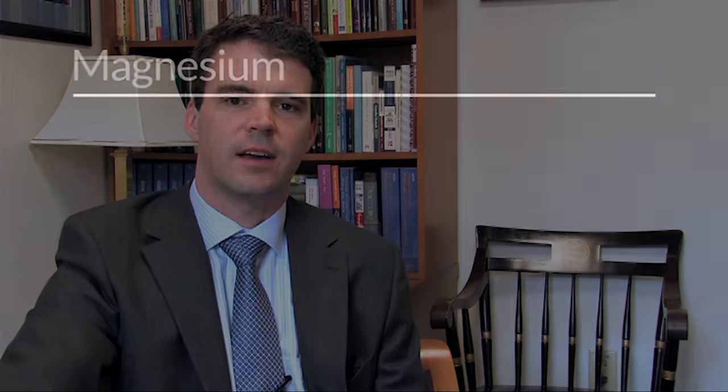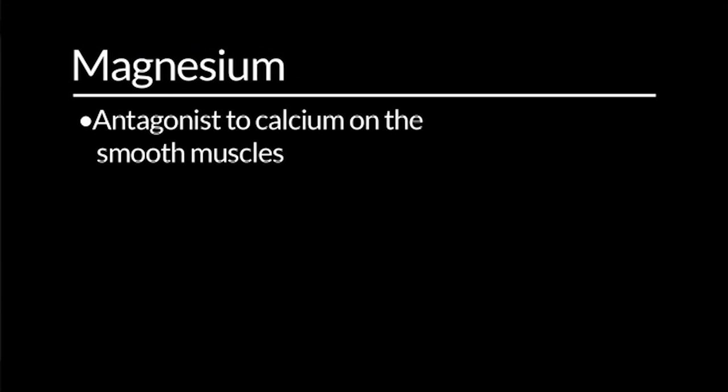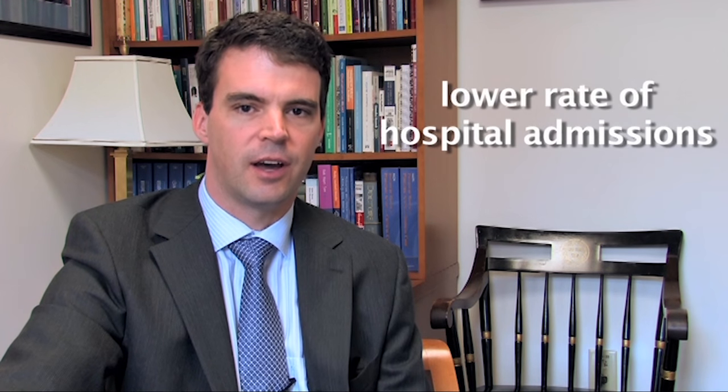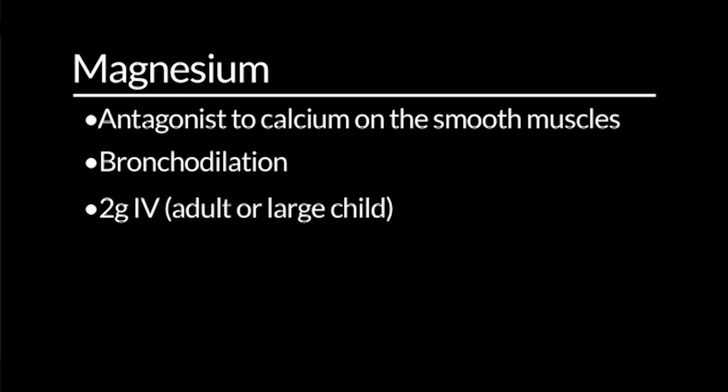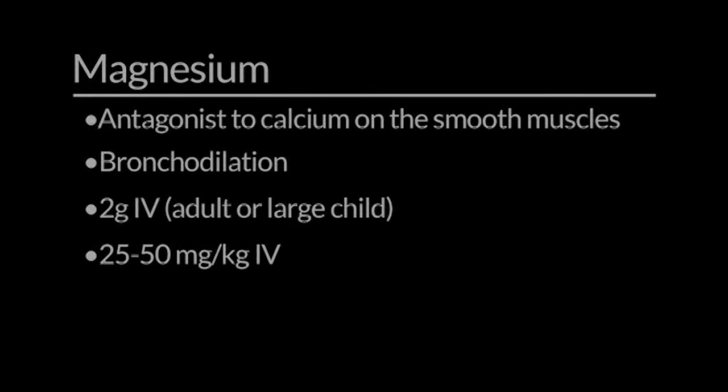Magnesium has been used in asthma attacks. It works as an antagonist to calcium on the smooth muscles and therefore mediates bronchodilation. Much of the data supporting magnesium comes from emergency room studies where patients who received magnesium had a lower rate of hospital admission. We typically use magnesium at the same dose as in resuscitation: 2 g IV in an adult patient or larger child, or 25 to 50 mg per kg otherwise. The following treatments are not recommended by the National Heart, Lung, and Blood Institute 2007 guidelines.